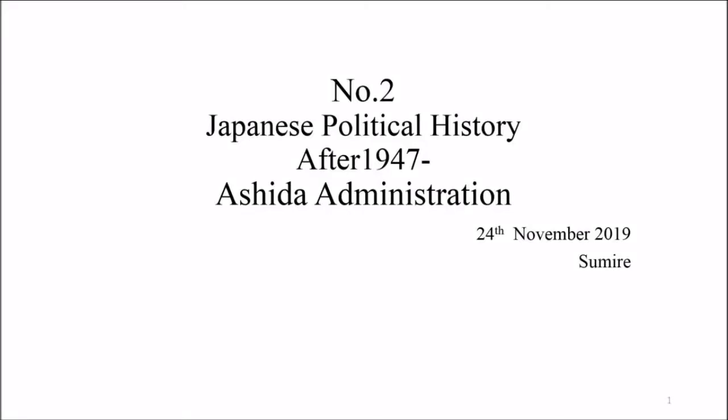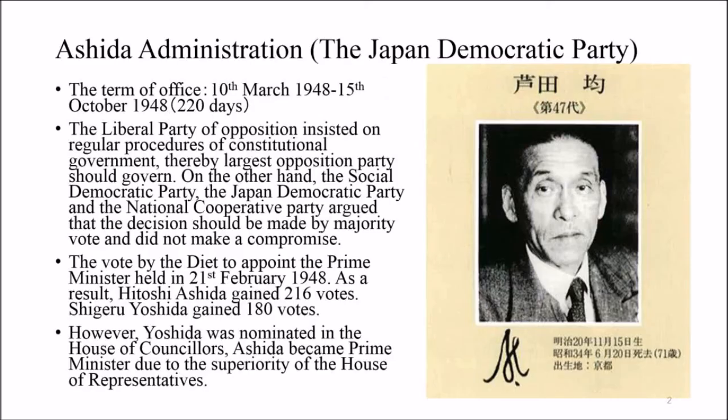This section covers Japanese political history after 1947, focusing on the Ashida administration. The term of office of the Ashida administration ran from 10th March 1948 to 15th October 1948.